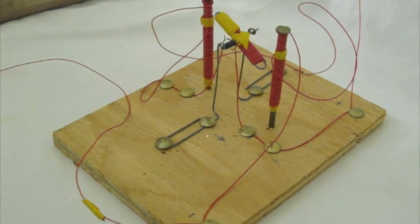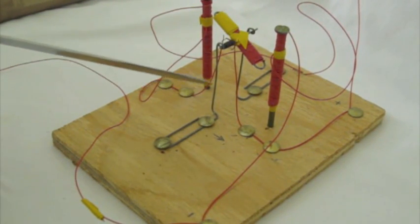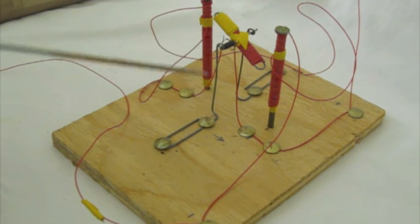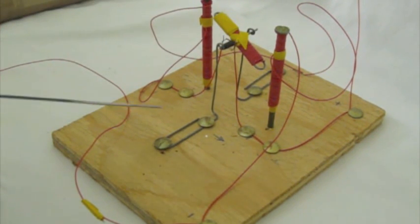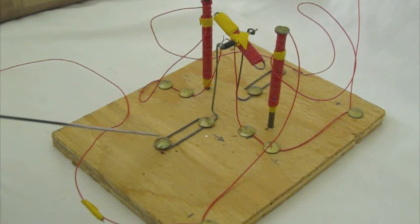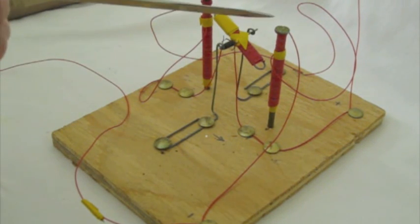Today we have a homemade motor made of paperclips. This is a paperclip here. We have paperclips up here on the armature. It's made of a paperclip. We have thumbtacks, a bunch of wire, and a couple of 16-penny nails.